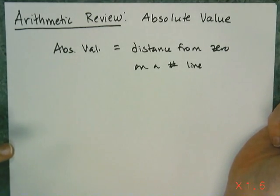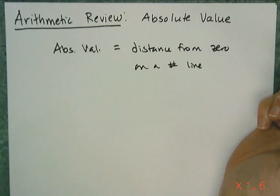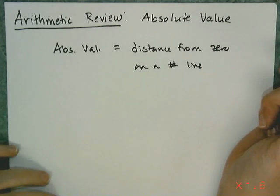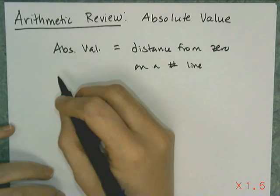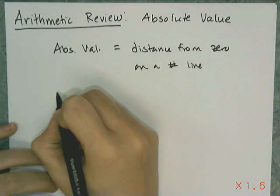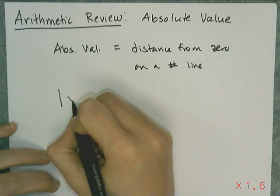We use absolute value quite a bit in algebra because there are times when we don't care about what direction a number is or what side of zero the number is on. We care about how big the number is. And the symbol we use in mathematics for absolute value of x, or any number, are these straight vertical bars.